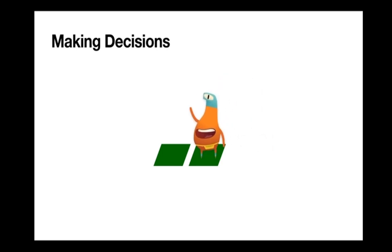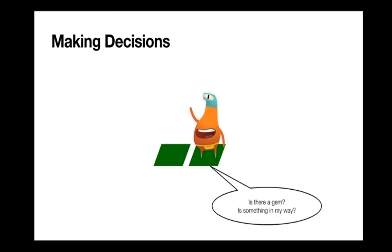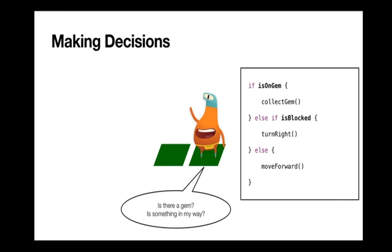When we get to conditional coding, Byte actually does a little evaluation of his surroundings before we run any code. So Byte hops onto that first tile and asks himself, 'Hey, is there a gem here? Is there something in my way?' And based on the answers — in this case, there's no gem and nothing in his way — we'll set certain properties on Byte. We've used some of those properties like isOnGem or isBlocked, and each one is set as a result of the answer to those questions.